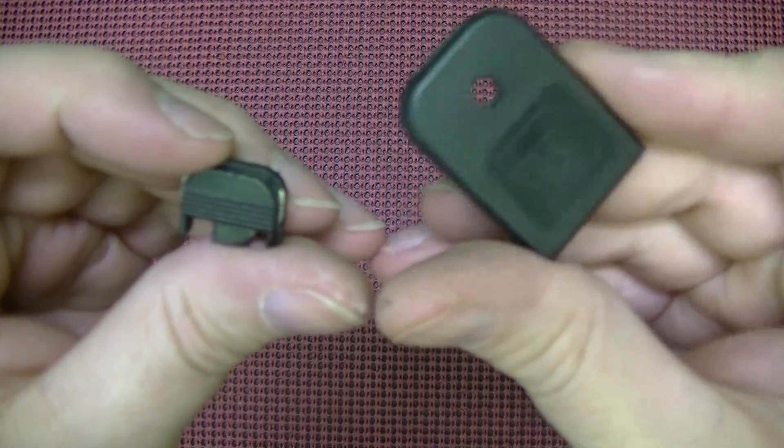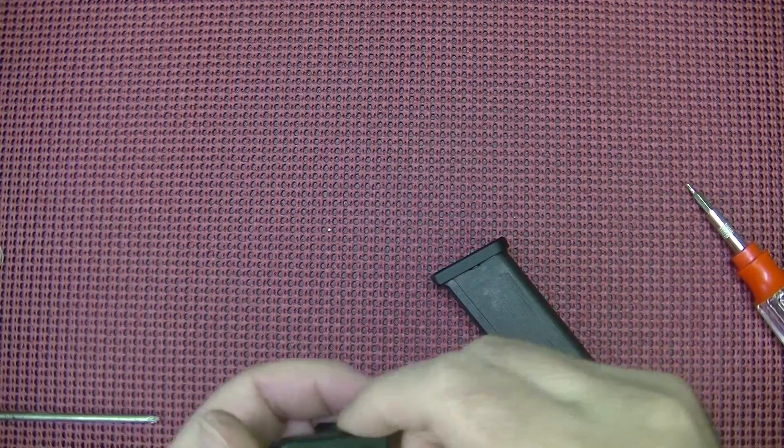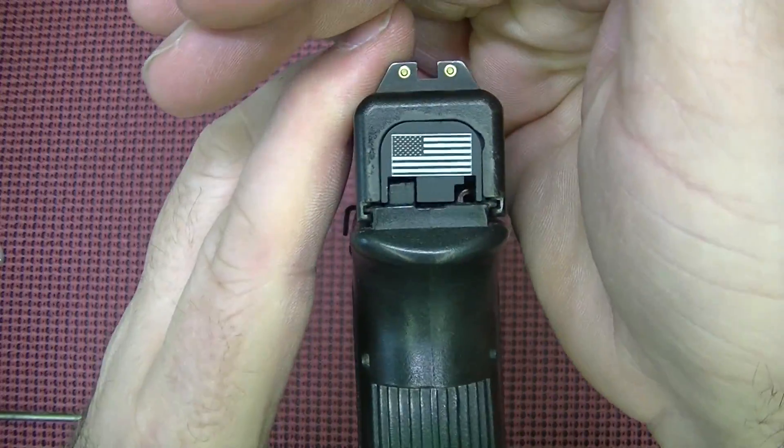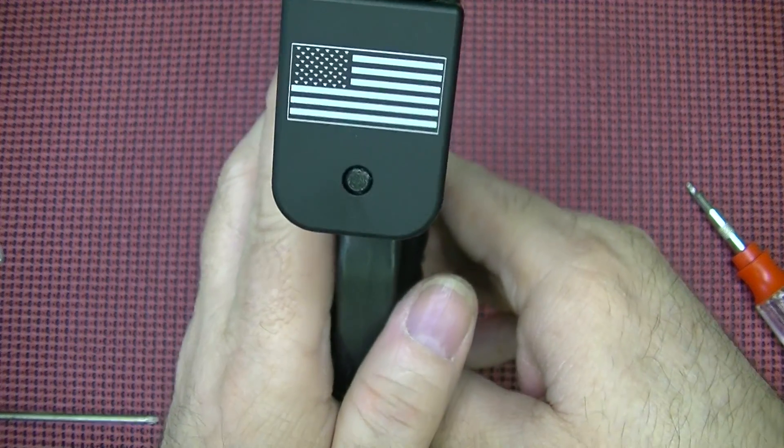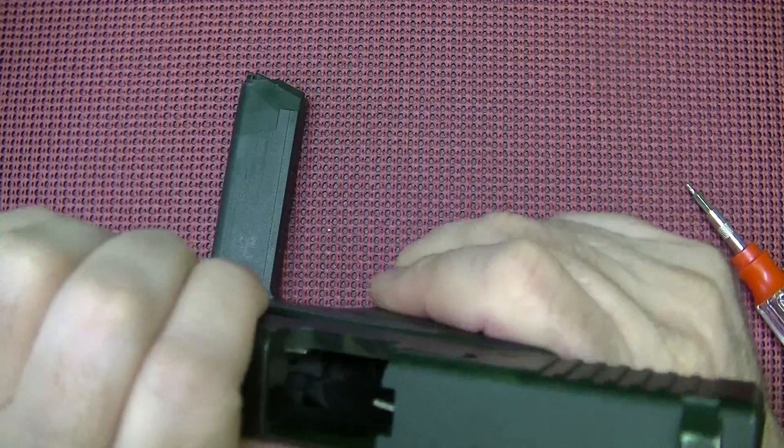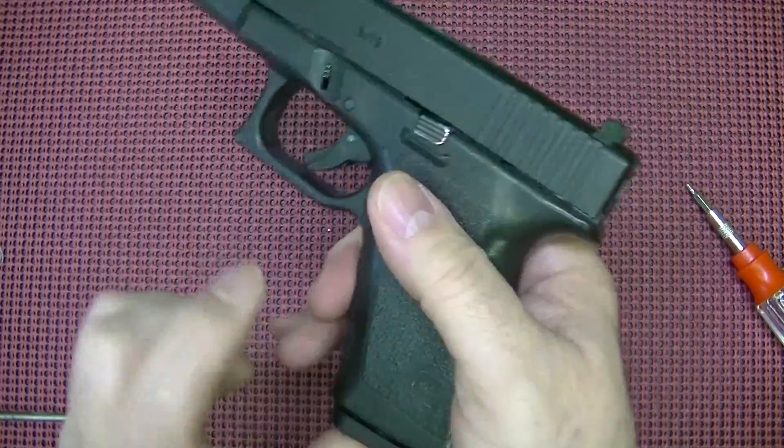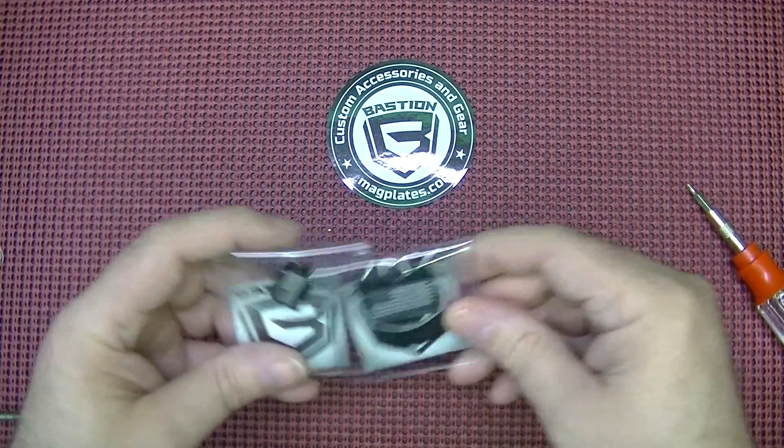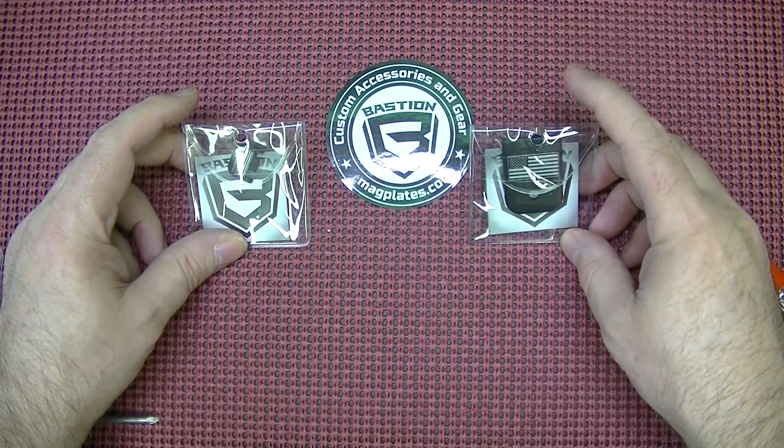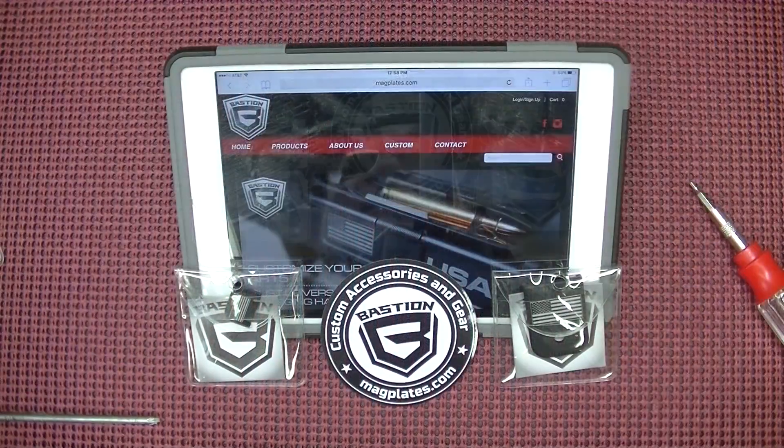But here's the old Glock slide end plate and the magazine base plate. And then here we have the new end plate and the new base plate on the magazine. It's really a short process. It doesn't take long to do. And you can personalize your gun. They have a pretty good assortment of base plates and end plates for your slide and base plates for your magazine. And you can check them out.